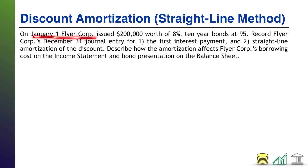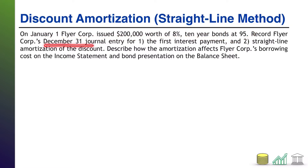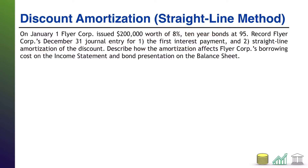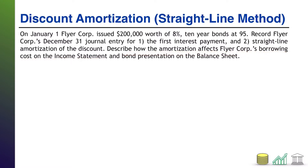On January 1st, Flyer Corps issued $200,000 worth of 8% 10-year bonds at $95. Record Flyer Corps' December 31st — so one year later — journal entry for the first interest payment and straight line amortization of the discount. In addition to the journal entry, try to describe how that amortization will affect Flyer Corps' borrowing costs on the income statement and bond presentation on the balance sheet.